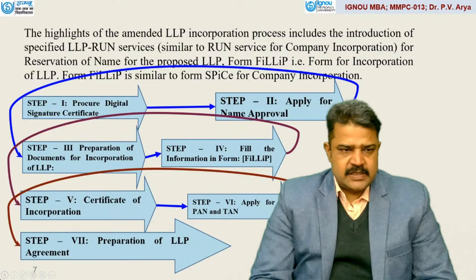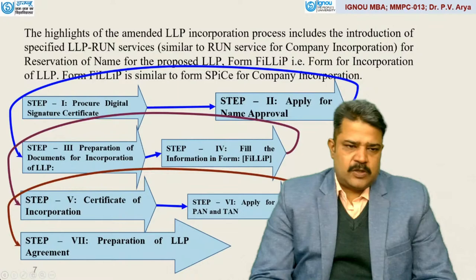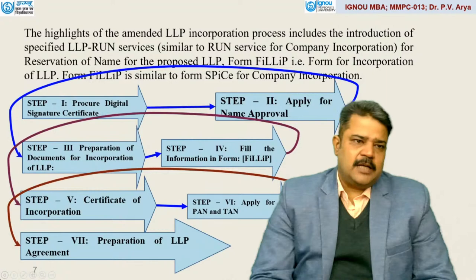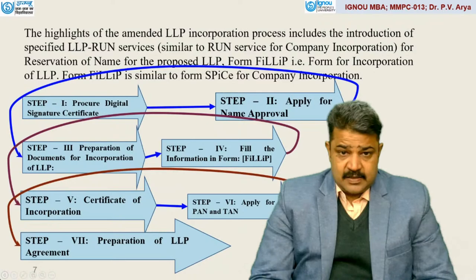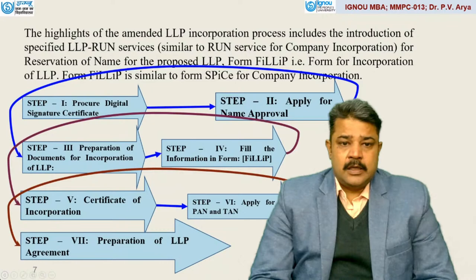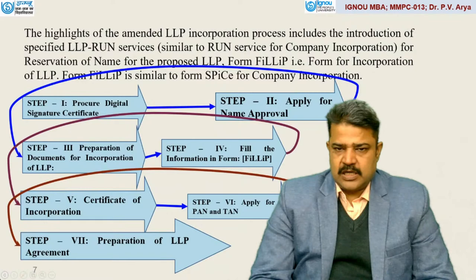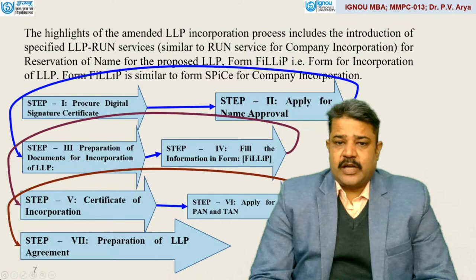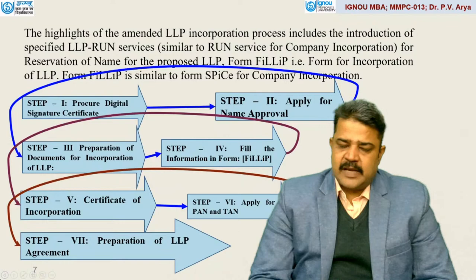There is a schematic, diagrammatic presentation of steps — step number one to step seven — in the total cycle of LLP formation. The form called FILLIP is similar to the SPICE form for company incorporation. For company formation, the form is S-P-I-C-E, whereas for LLP it is F-I-L-L-I-P. The first step involves the procurement of a digital signature certificate — a normal process you can explore.